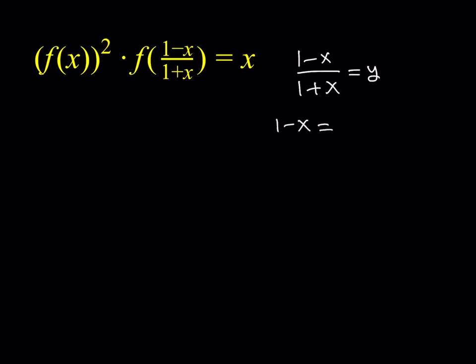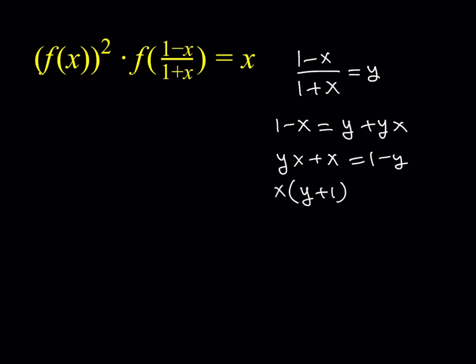Let's cross-multiply here: 1 minus x equals y plus yx. Since my goal is to solve for x, I'd like to collect all the x terms together on the same side. Adding x to both sides gives yx plus x, and subtracting y from both sides gives 1 minus y. Factoring out x: x times (y plus 1) equals 1 minus y. Dividing both sides by (y plus 1), we get x in terms of y: (1 minus y) divided by (1 plus y).